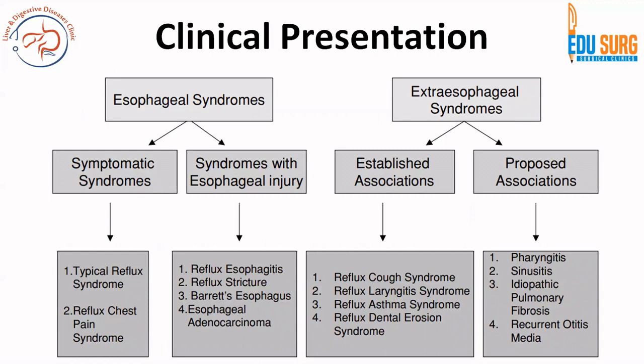This chart from the Montreal Consensus is one of the best descriptions of GERD's clinical presentation in literature. Disease presentation is divided into esophageal symptoms and extraesophageal syndromes. Typical esophageal symptomatology is the typical reflux syndrome — heartburn plus regurgitation — and reflux chest pain syndrome. The natural history of esophageal injury progresses through reflux esophagitis, stricture formation, Barrett's esophagus, and finally esophageal adenocarcinoma, presenting with dysphagia, odynophagia, GI bleed, weight loss, and anorexia.